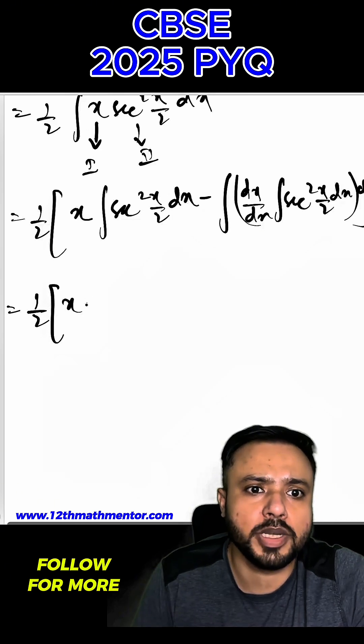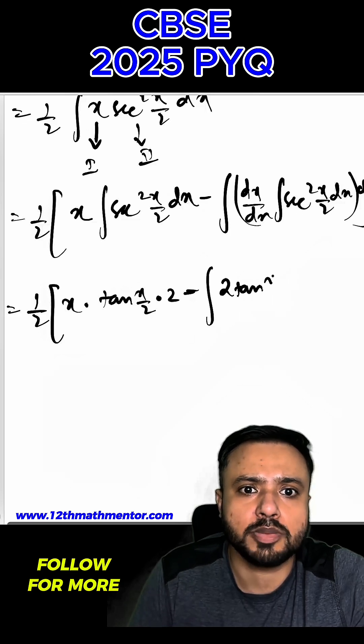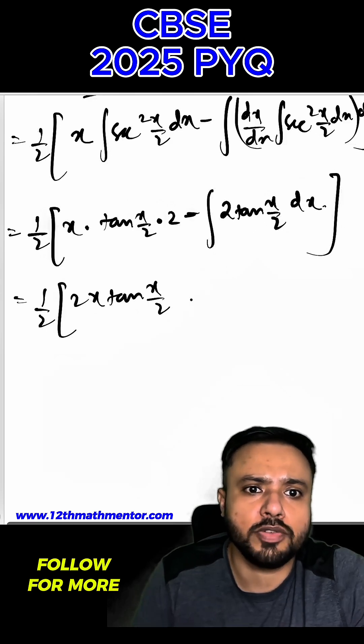So this will be 1 by 2 x. Now integral of sec square x by 2 would be tan x by 2 divided by 1 by 2, so we can multiply by 2 directly. The integral of dx by dx is 1 and this will also be 2 tan x by 2 dx. I call it as 1 by 2, 2 x tan x by 2.